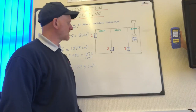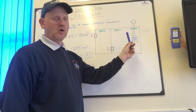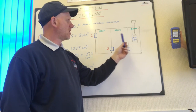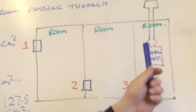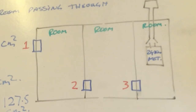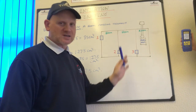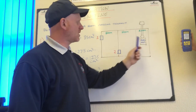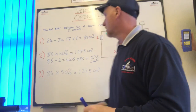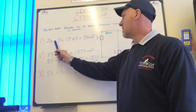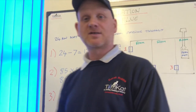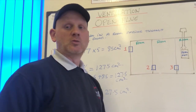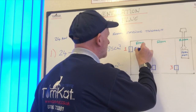This scenario is slightly different: an open flue boiler installed in a room, but with the flue passing through two rooms to reach it. This is a room, not a compartment, so we require three vents. For vent one with a 24 kilowatt net boiler: 24 minus 7 for adventitious air is 17, times 5 gives 85 centimetres squared for vent one.